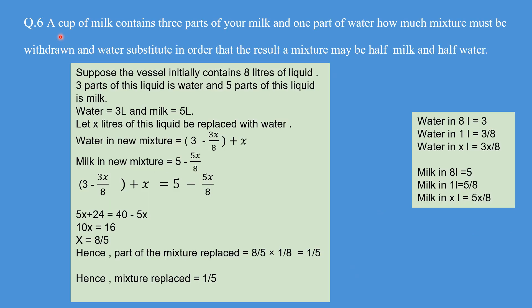Question 6: a cup of milk contains 3 parts of milk and 1 part of water. How much mixture must be withdrawn and water substituted in order that the resulting mixture may be half milk and half water? There is a cup which has 3 parts milk and 1 part water. We are going to withdraw a certain quantity of the mixture and put water in, so the net effect is half milk and half water. Suppose the vessel initially had 8 liters of liquid — so water is 3 liters and milk is 5 liters as given.